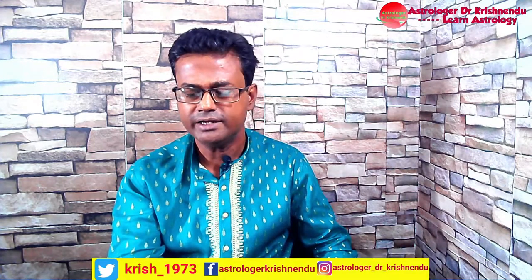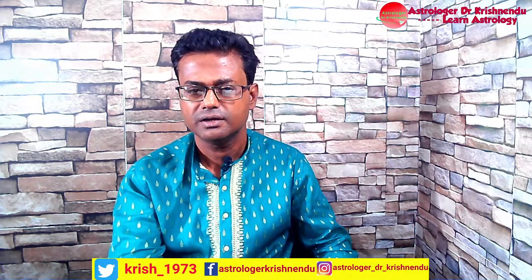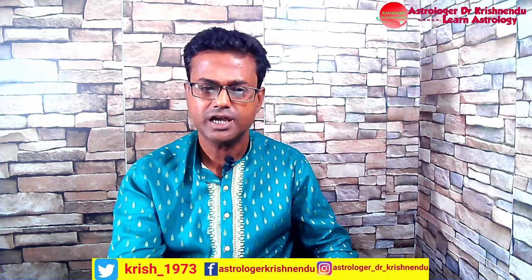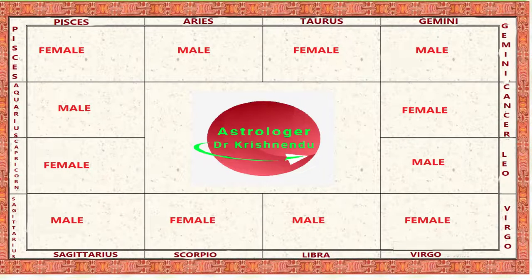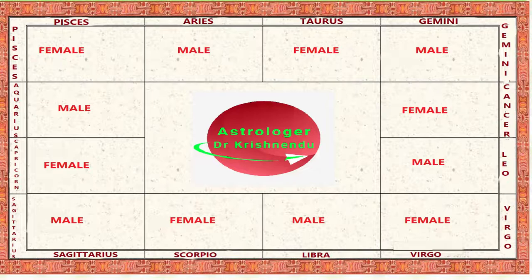Come back to the main discussion. First, I will talk about the male zodiac sign and female zodiac sign. Aries, Gemini, Leo, Libra, Sagittarius, and Aquarius — these six signs are male signs. Taurus, Cancer, Virgo, Scorpio, Capricorn, and Pisces — these six signs are the female signs.